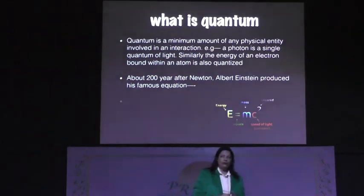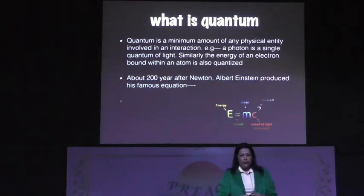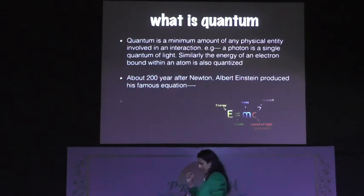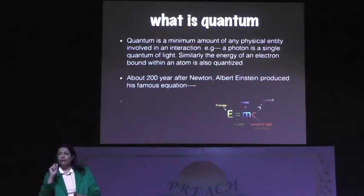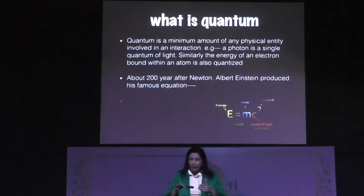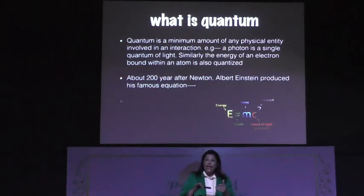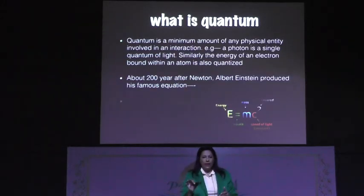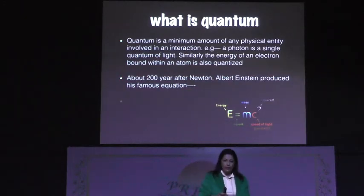What is quantum? Quantum is the minimum amount of any physical entity — the smallest. The smallest pattern is the light wave. The smallest particle? Quantum. Involved in an interaction — that is their smaller unit. A photon is a single quantum of light. Similarly, the energy of an electron bound within an atom is also quantized.